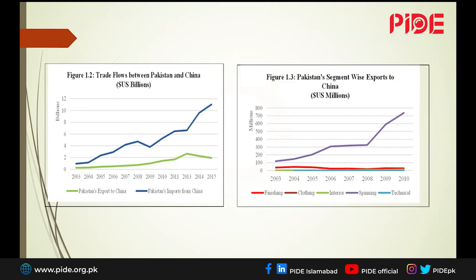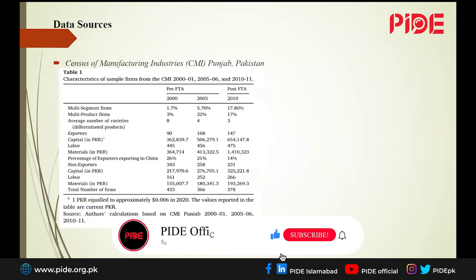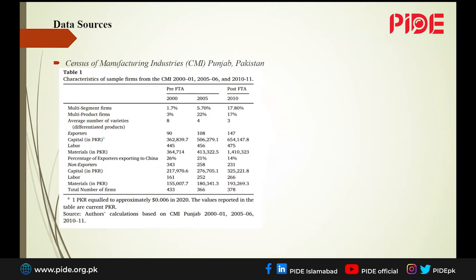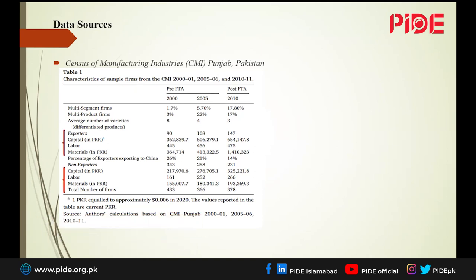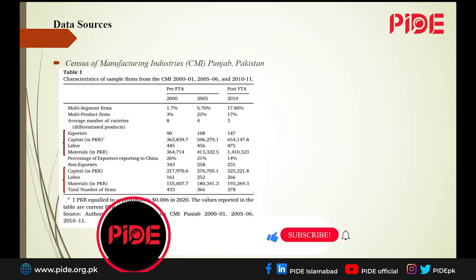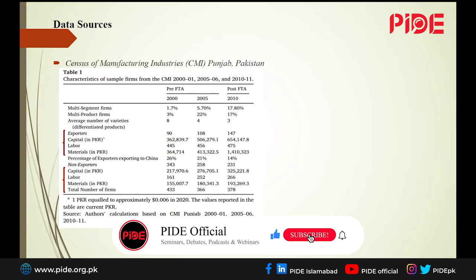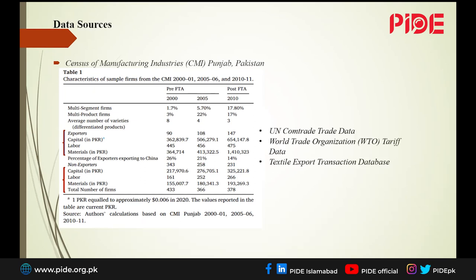The dataset we use is a census of manufacturing industries — a firm-level census. We have three time periods: 2000, 2005, and 2010. We construct an unbalanced panel where 2000–2005 is considered pre-FTA and 2010 is post-FTA. We have exporters and non-exporters, and there is selection into being an exporter. Exporters are much bigger even before and after the FTA in terms of capital, labor, and material — much larger in input size compared to non-exporters.